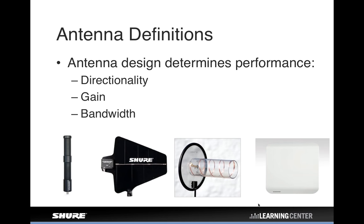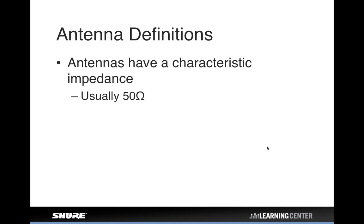The physical shape, size, and design of the antenna affects how it performs in terms of directionality, any additional gain associated with it, and the bandwidth or range of frequencies it's sensitive to. Antennas also have a characteristic impedance — for professional wireless mic systems it's a 50-ohm antenna, meaning 50-ohm cable, and the receivers are designed to be interfaced at 50 ohms as well. You might encounter 75-ohm cable, since cable TV systems use 75-ohm, but for our purposes it's 50-ohm.